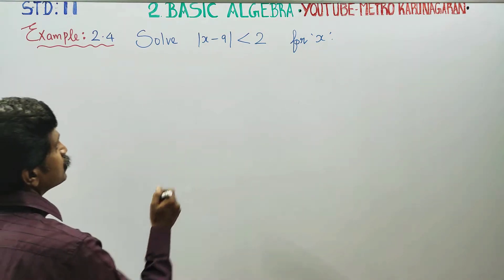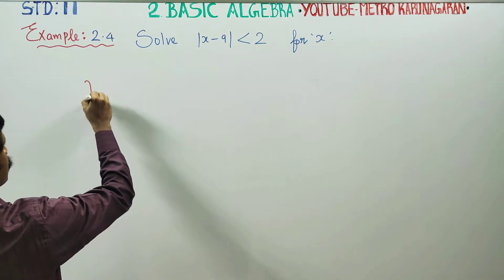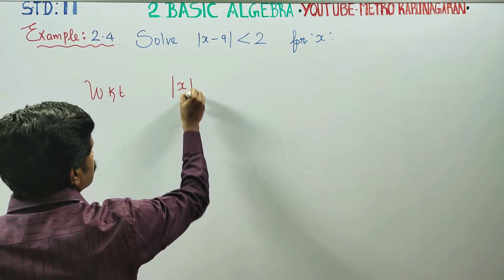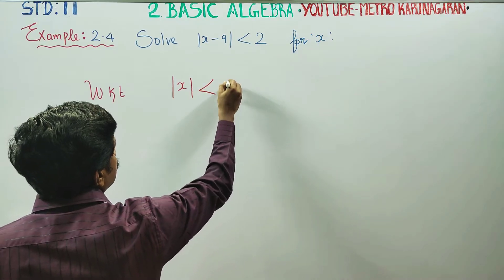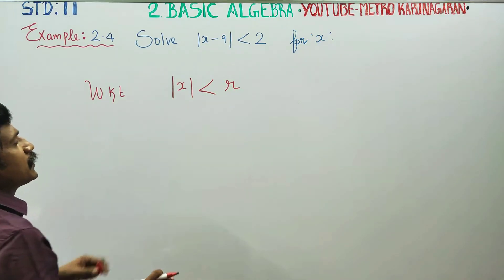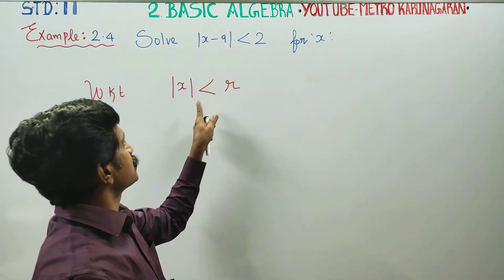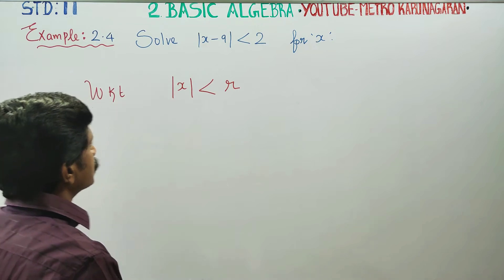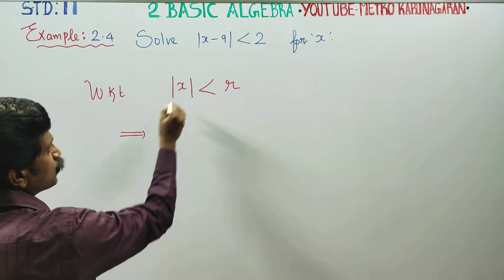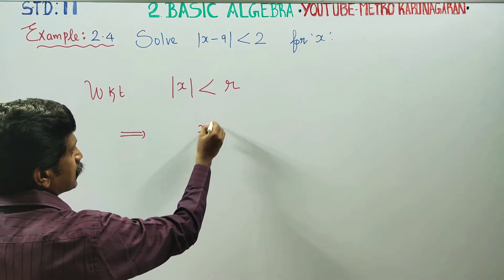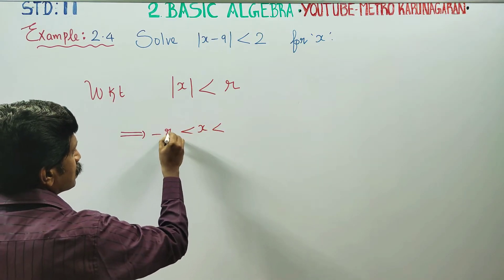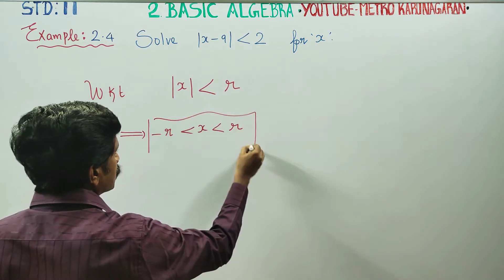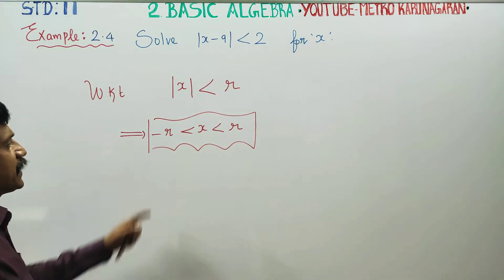Before entering into this problem, we have to know this formula: modulus of x less than r. This is the setup — modulus of a value is less than r. When we remove the modulus, the answer is: minus r, plus r. The interval will be between minus r to r.